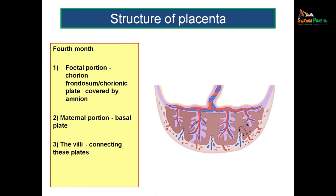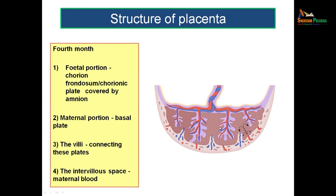Since maternal blood and fetal blood are not directly mixed, the fetal capillaries travel through the villi and exchange with maternal blood in the intervillus spaces — the spaces between the villi filled with maternal blood. The surface facing the fetus is the chorionic plate, covered by the amnion. The structure related to the mother is the basal plate. The villi traverse between them, and the intervillus spaces are filled with maternal blood.